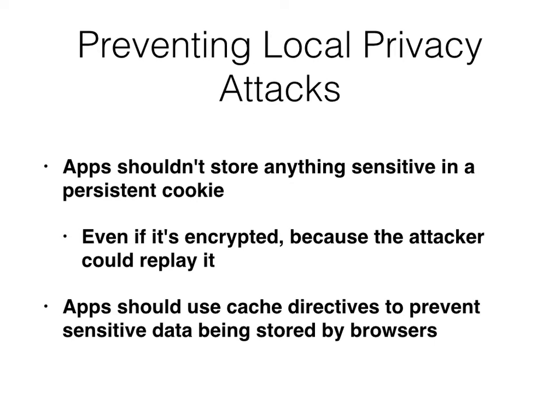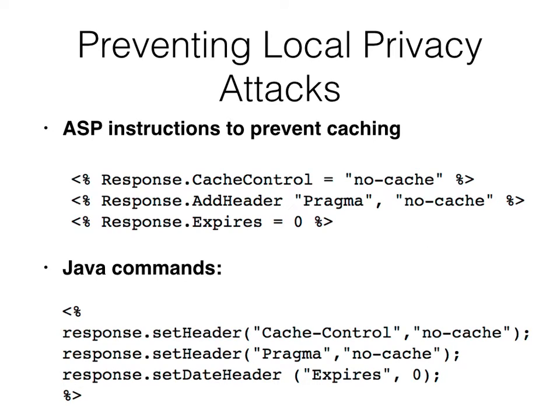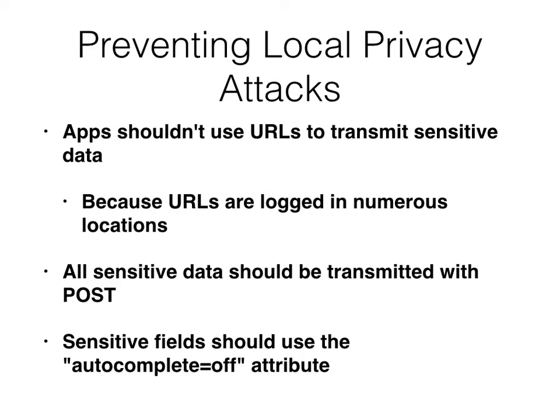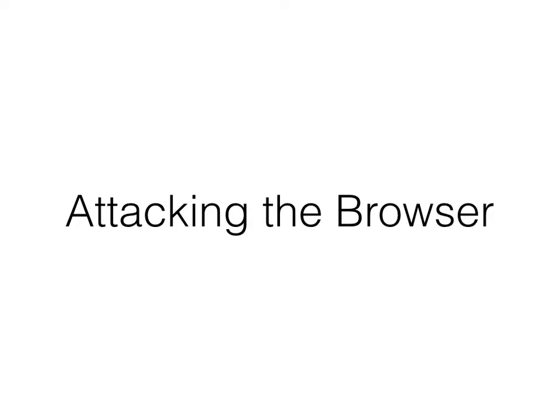You should use your cache directives to prevent the browser from storing sensitive data. Here are the ASP instructions and Java commands to set these headers to prevent your app from having cached data stored in the browsers. You shouldn't use URLs to send sensitive data — don't use GET to send sensitive parameters because they'll end up in the log and in the favorites of browsers. You should send anything sensitive with POST. You can use the autocomplete equals off attribute to prevent browsers from automatically filling in fields, which is a good thing to do to protect the user.